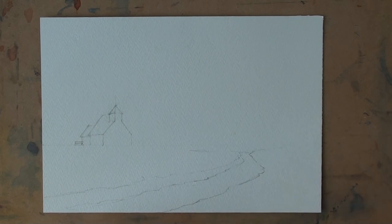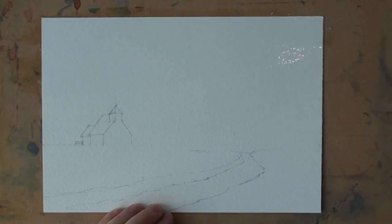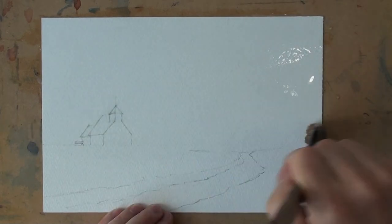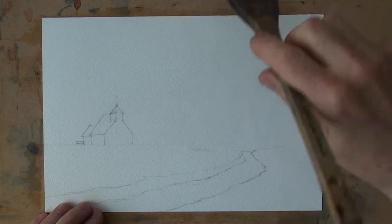So I've masked the sun and I'm going to wet the paper with clean water using a goat hair hake brush. Just wet the front, make sure that is completely covered.